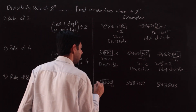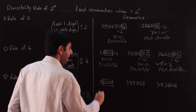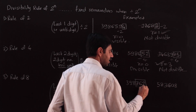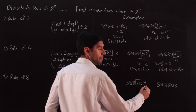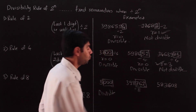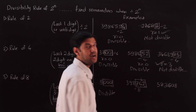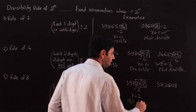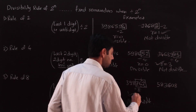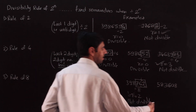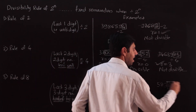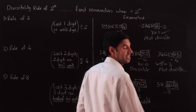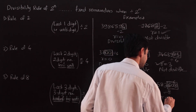Any number ending with three zeros will definitely be divisible by 8 — the remainder is 0. For rule of 8, ignore everything except the last three digits. For example, dividing by 8: 8 nines are 72, carry over 4; 8 fives are 40 — remainder is 2, so the number is not divisible. Another example: 8 sevens are 56, carry 4; 8 sixes are 48 — completely divisible, remainder 0, so the number is divisible.